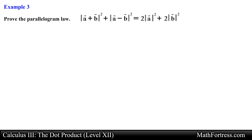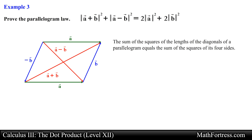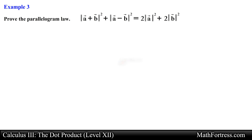Proof the parallelogram law. The parallelogram law states that the sum of the squares of the lengths of the diagonals of a parallelogram equals the sum of the squares of its four sides. We can easily prove this by working with the left hand side of the law.